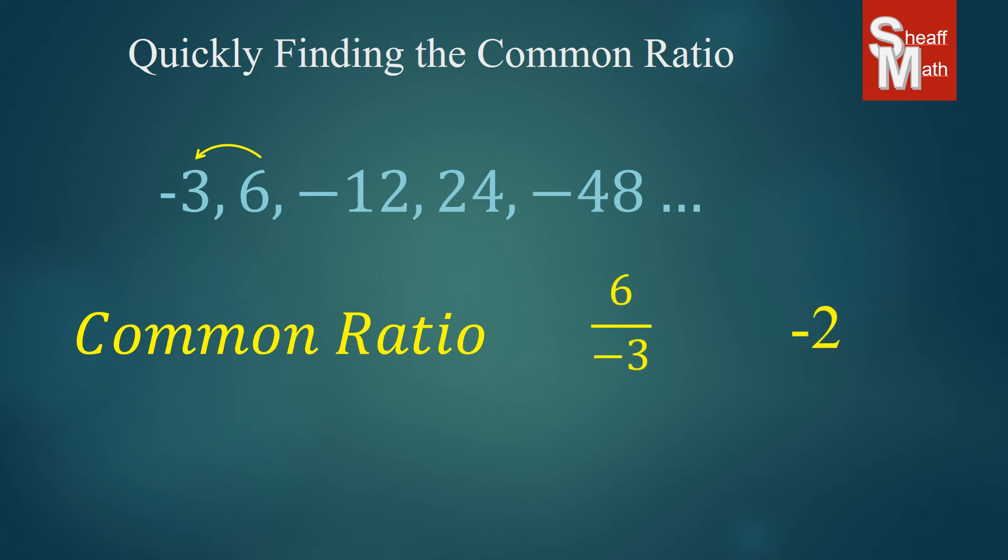And if you did it to negative 12 divided by 6, you would get negative 2. 24 divided by negative 12, that's negative 2 as well. And so anytime you see them going back and forth from negative to positive, your common ratio is going to be a negative number.